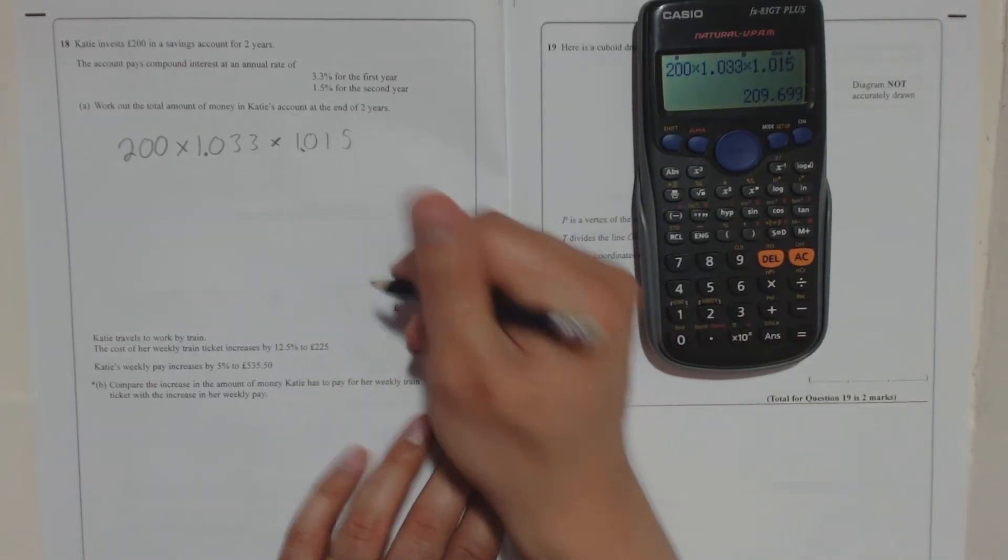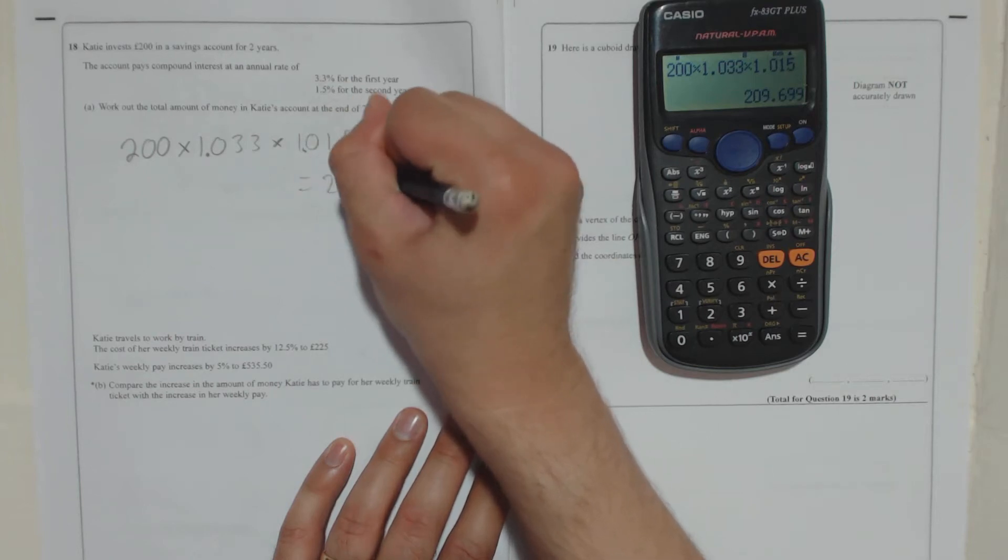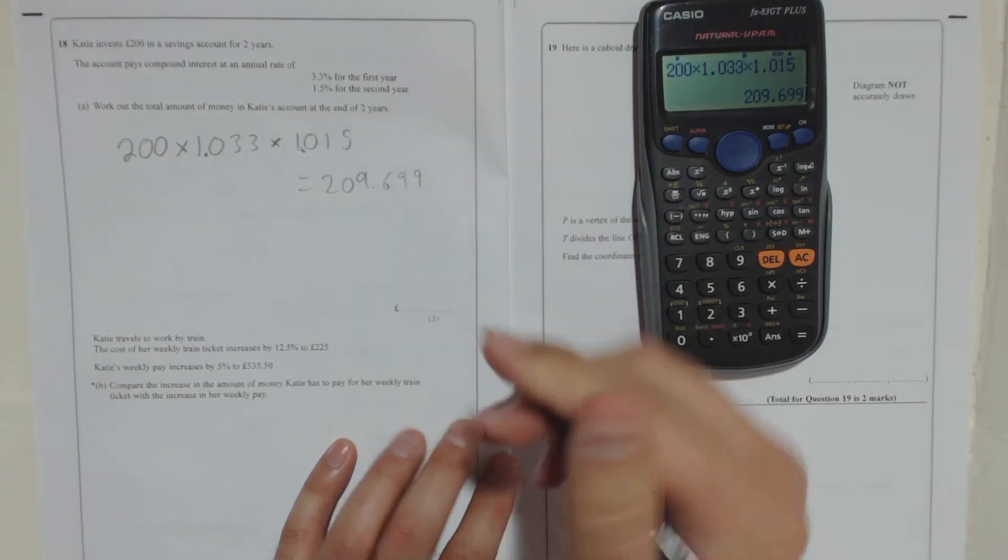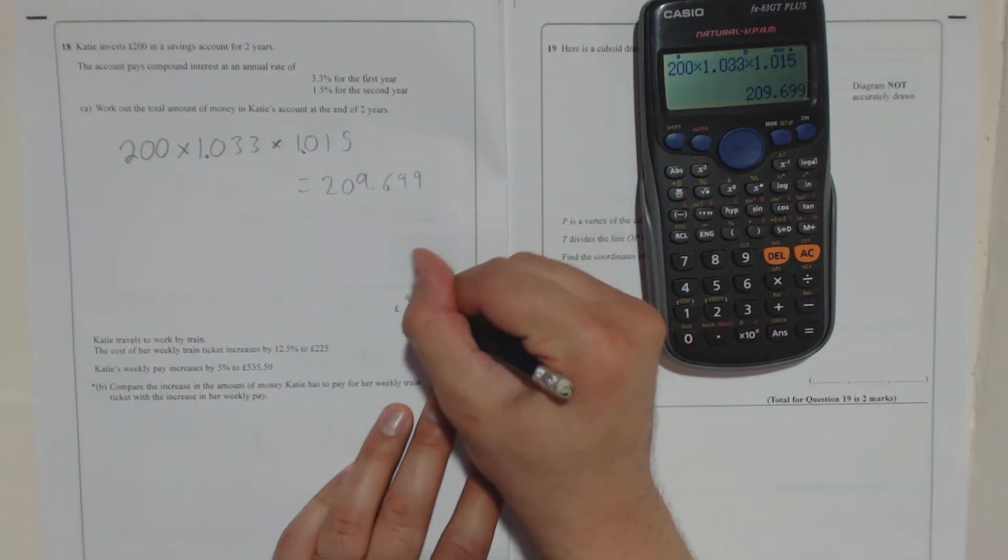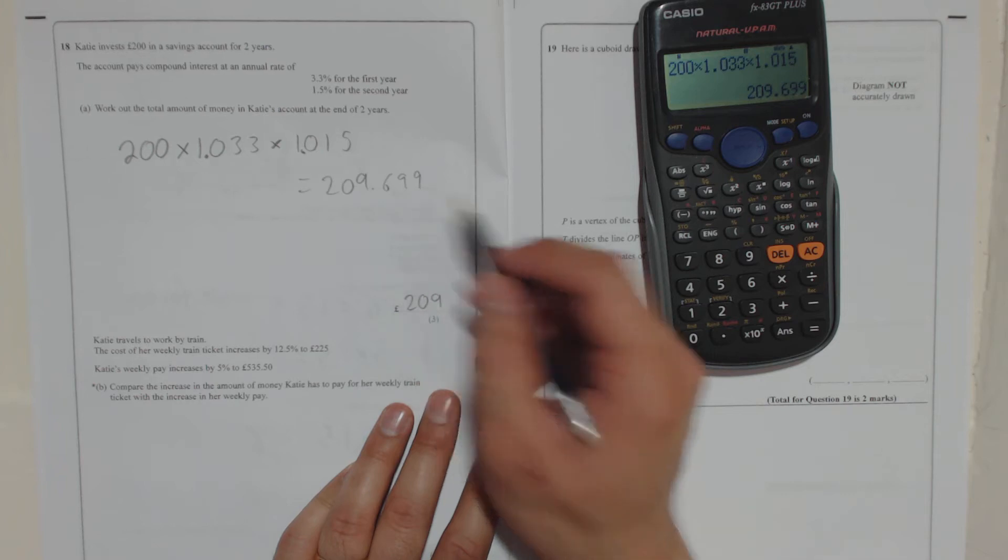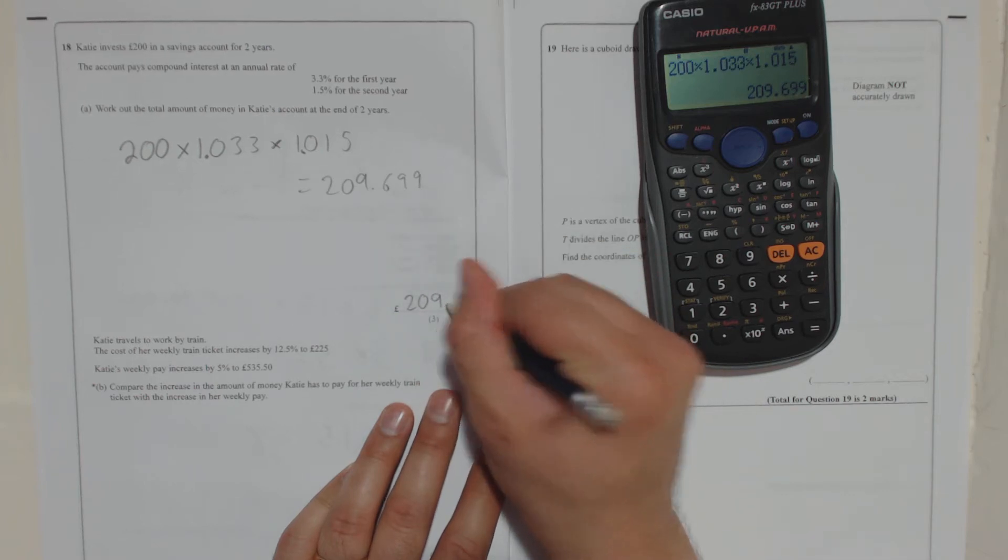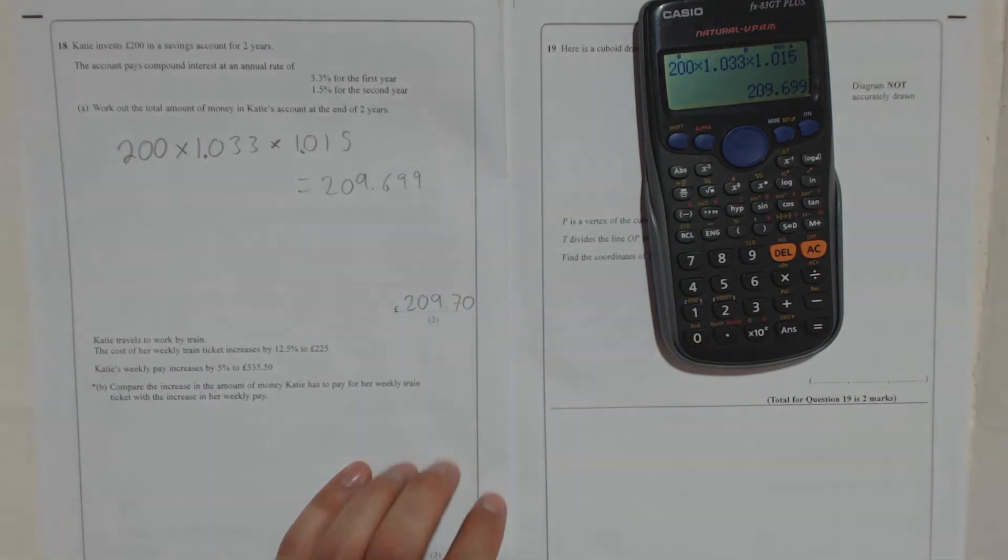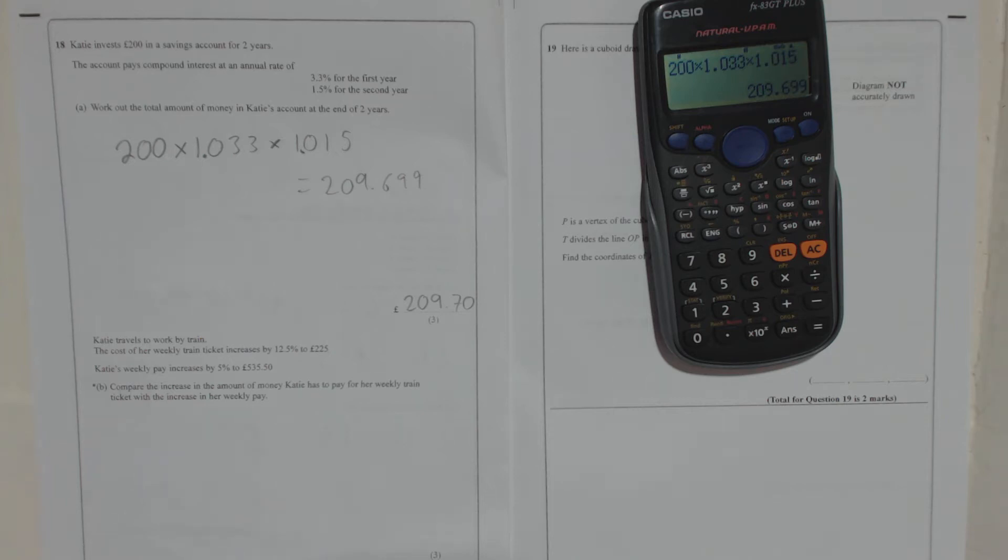So the total amount of money, 209.699, is 209 pounds, and let's round up 70 pence. Right. Next.